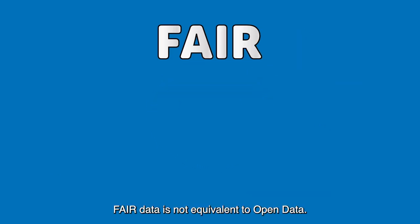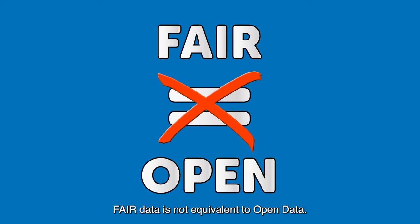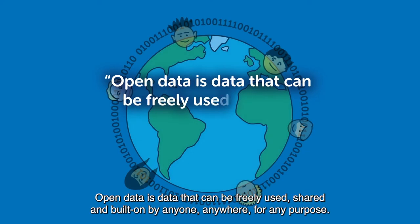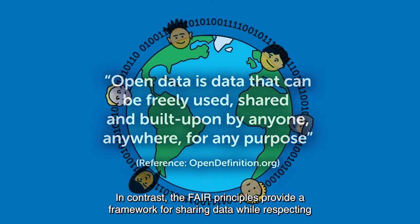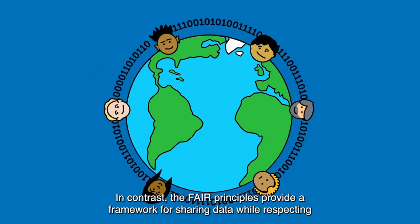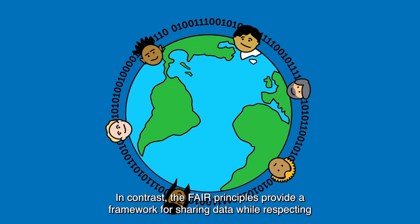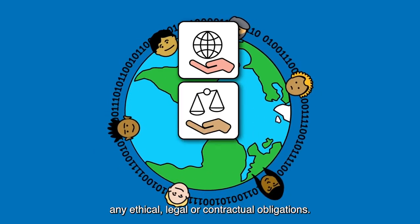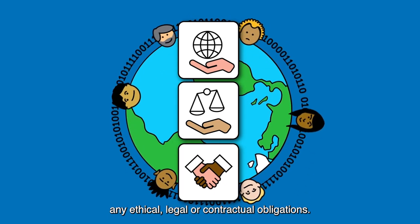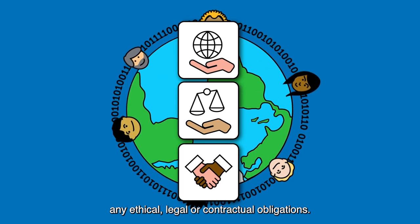FAIR data is not equivalent to open data. Open data is data that can be freely used, shared, and built on by anyone, anywhere, for any purpose. In contrast, the FAIR principles provide a framework for sharing data while respecting any ethical, legal, or contractual obligations.